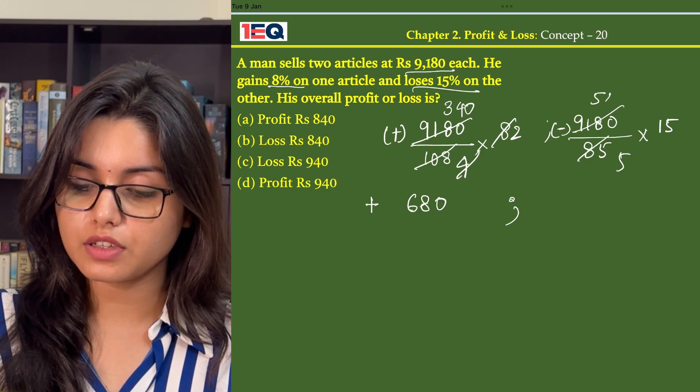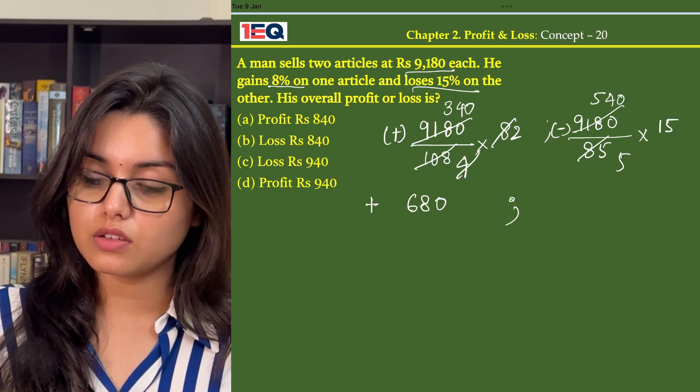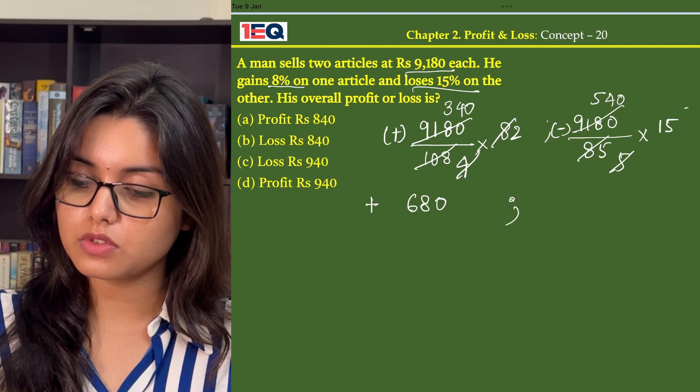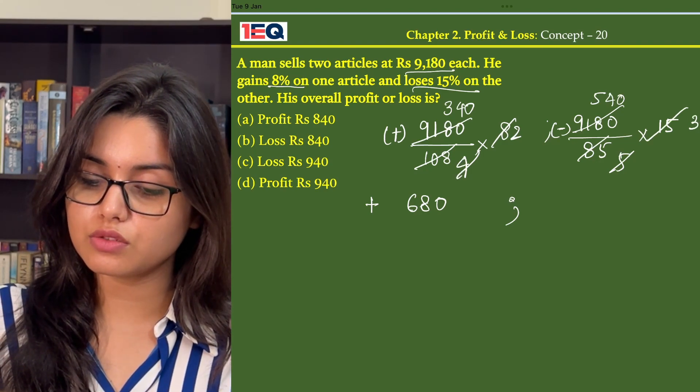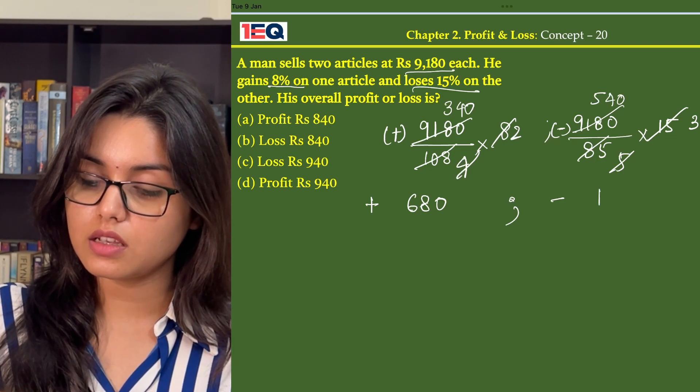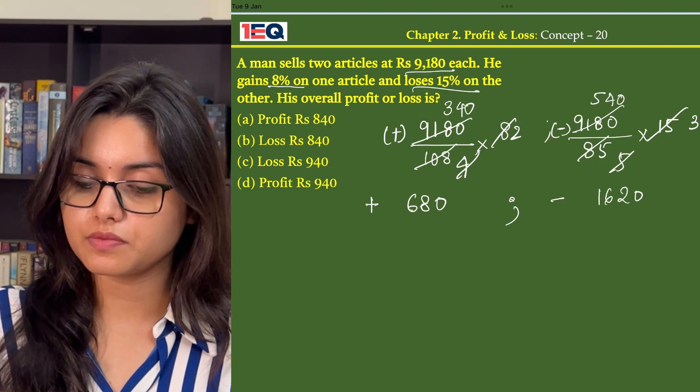And here on dividing by 17, we get 5, 5 is 85, 4 is 0 and this becomes 3. So 5, 40 into 3 gives us 16, 20 in negative.